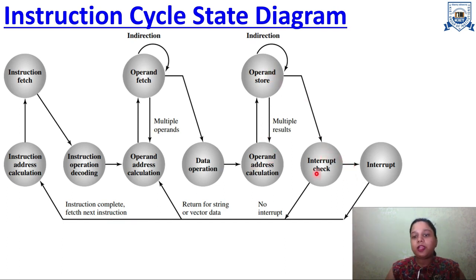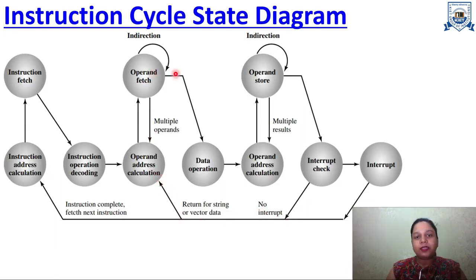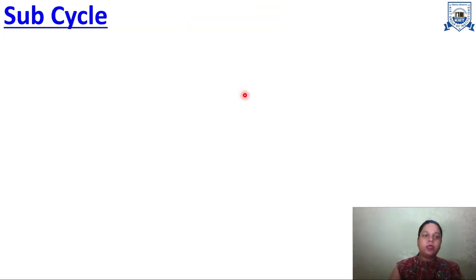Next, an interrupt is checked — if there is any interrupt or not. If there is no interrupt, it moves forward. If there is an interrupt, the interrupt cycle is executed, then it comes back. Once results are stored and the instruction is completed, it fetches the next instruction. This is the complete instruction cycle state diagram, showing how any instruction is executed.